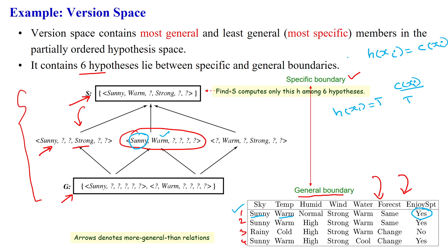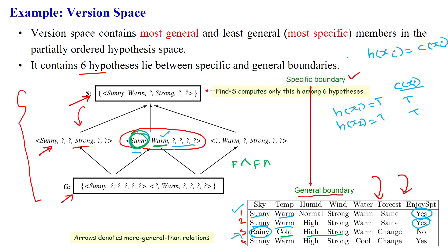Checking example two: sunny — here also sunny; warm — here also warm; remaining attributes are all wildcard symbols, which accept all values. So h(x2) is true and c(x2) is also true — both are equal. For example three: it is rainy but the hypothesis value is sunny, so it gives false. It is cold but the hypothesis requires warm, so also false. The remaining attributes are wildcards, which are true.